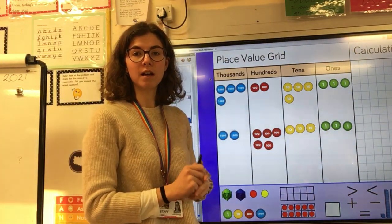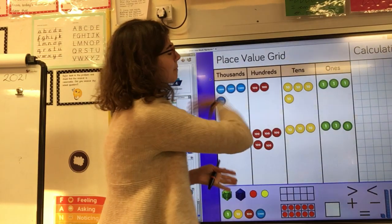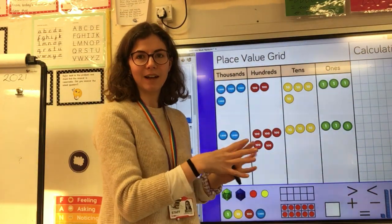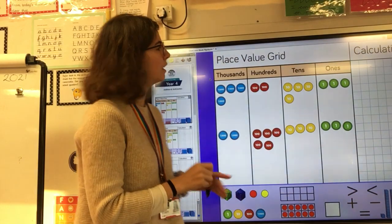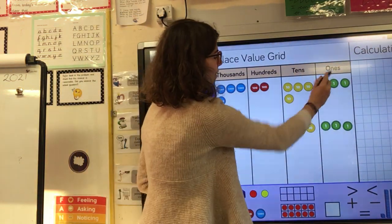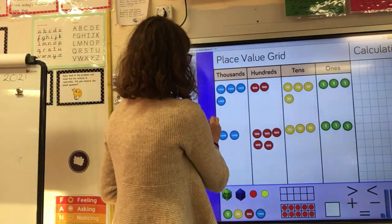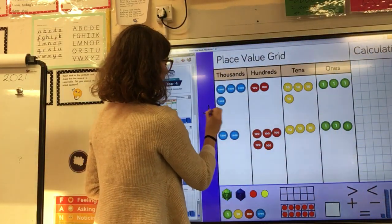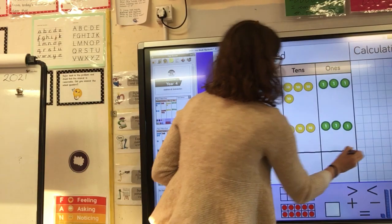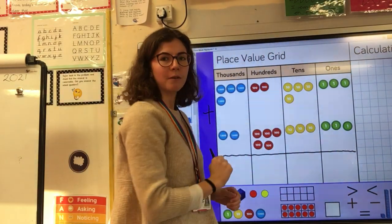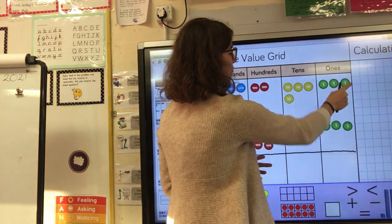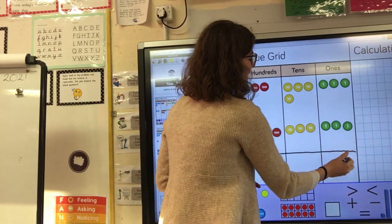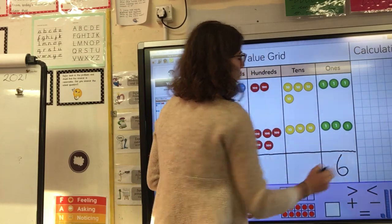I'm going to start by adding the digits in the place value column with the lowest value. In this case that is my ones column. So in my ones I've got three ones add three ones. I know that three add three is one, two, three, four, five, six. I've got six ones.